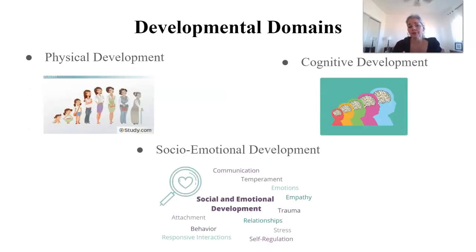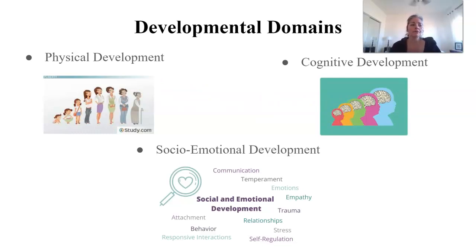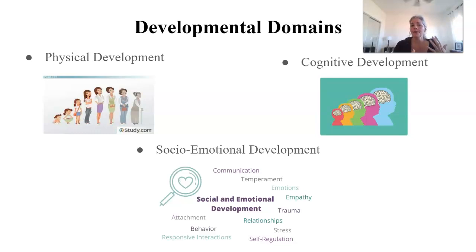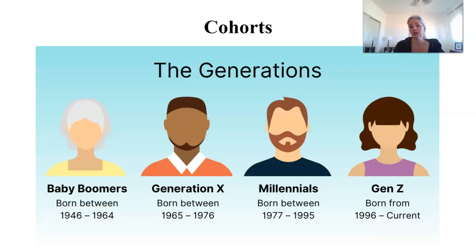In physical development we study the brain and body and how those change over time. In cognitive development we study thinking, language, reasoning, problem solving, and metacognition — thinking about thinking. Social and emotional development covers our self-perceptions, emotional regulation, awareness of and response to emotions, and our connections and relationships with others and how those change and evolve over time.